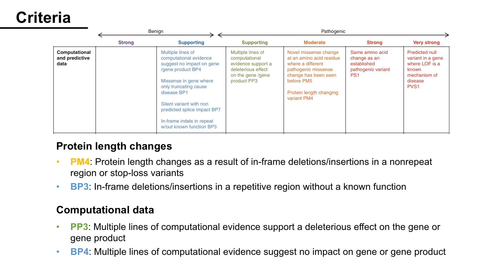Protein Length Changes: PM4 is for protein length changes as a result of in-frame deletions/insertions in a non-repeat region or stop-loss variants. BP3 is for in-frame deletions/insertions in a repetitive region without a known function.